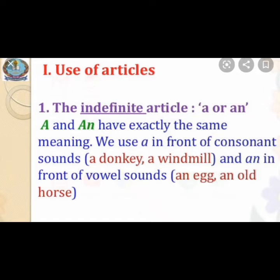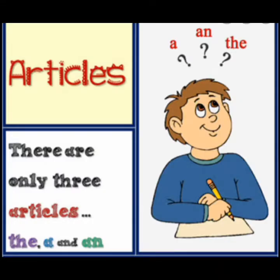The indefinite articles 'a' and 'an' have exactly the same meaning. We use 'a' in front of consonant sounds — for example: a donkey, a windmill. And 'an' is used in front of a vowel sound — for example: an egg, an old horse.